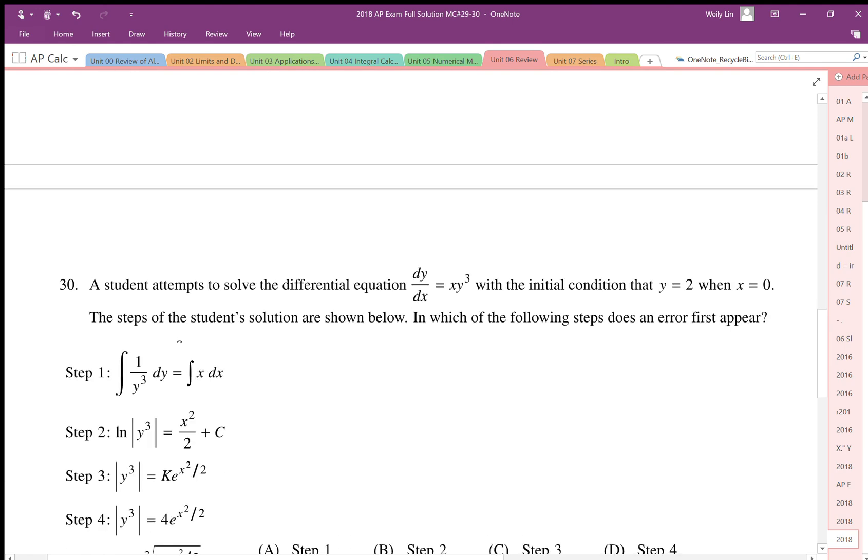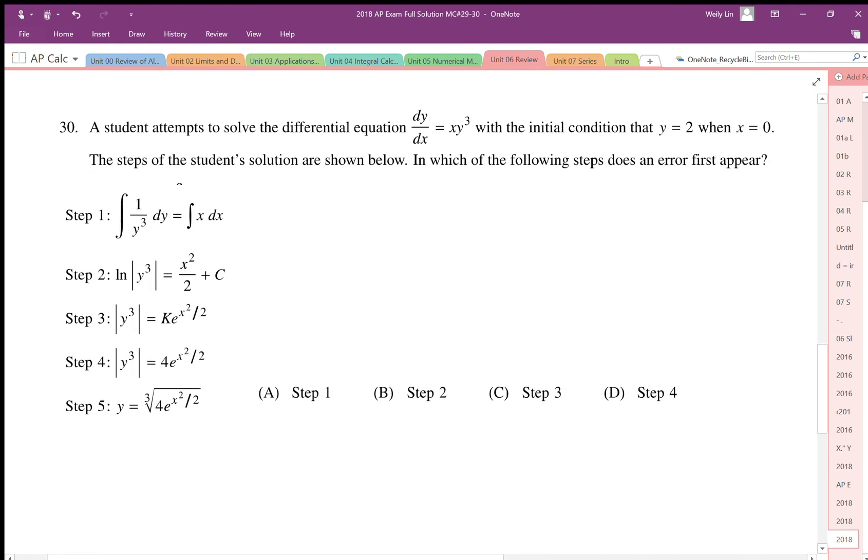Question number 30 says a student attempts to solve a differential equation dy/dx equals x times y cubed, with initial condition y equals 2 when x equals 0. It asks which of the steps does a first error appear.